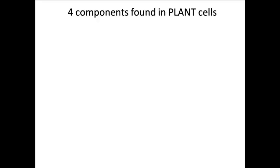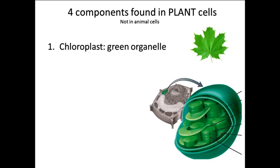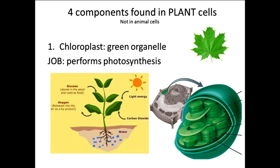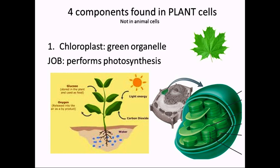We have just covered the six organelles found in all eukaryotic cells — both plants and animals. Plants have a couple of extra things not found in animal cells. The first are chloroplasts — the green organelles. They make leaves green and perform photosynthesis, a complex process where plants take carbon dioxide, water, and light energy to make glucose. Plants make their own food and also produce oxygen as a byproduct. We will learn about photosynthesis later.